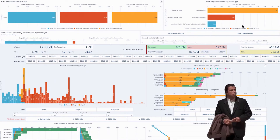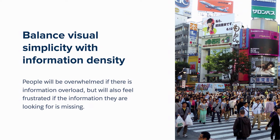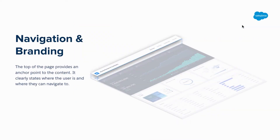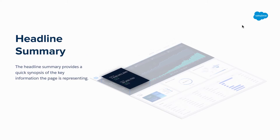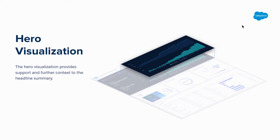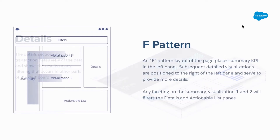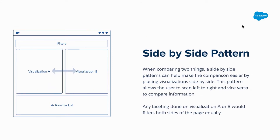But sometimes our dashboards end up with information overload — so how do you scale that back? Much of design is an editing process. You balance visual simplicity with information density. We follow good design principles just like a newspaper — we start with a headline, a body, the details. There's a hierarchy involved. In our Einstein Analytics templates, we have navigation and branding at the top, a filter bar, often a headline summary, a supporting hero visualization that helps facet the details below, some supporting visualizations, and actionable detail lists. We also use patterns like the F pattern — your eye moving naturally from the top to the bottom, left to right — the Z pattern for mobile, and a side-by-side pattern for comparison.